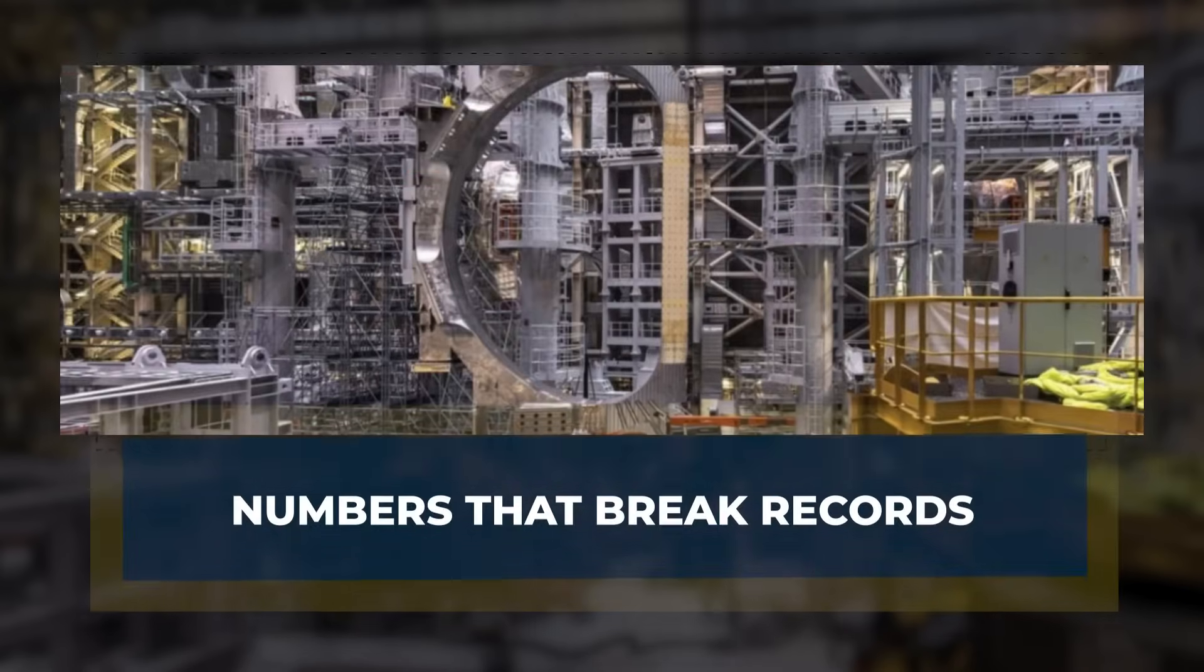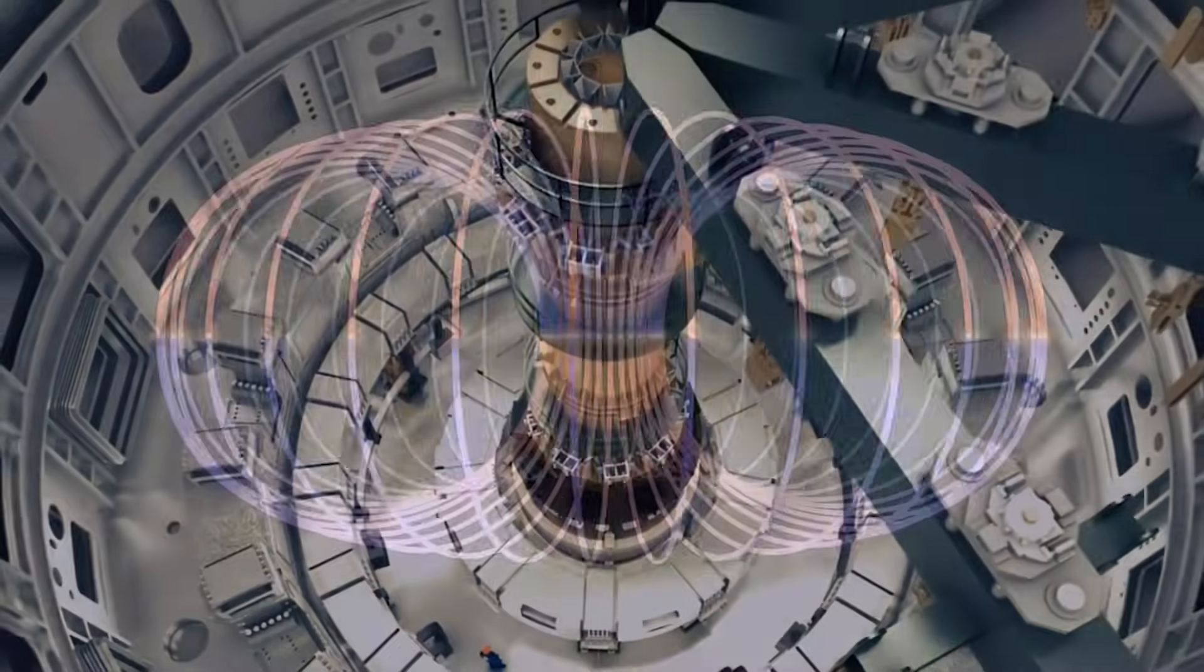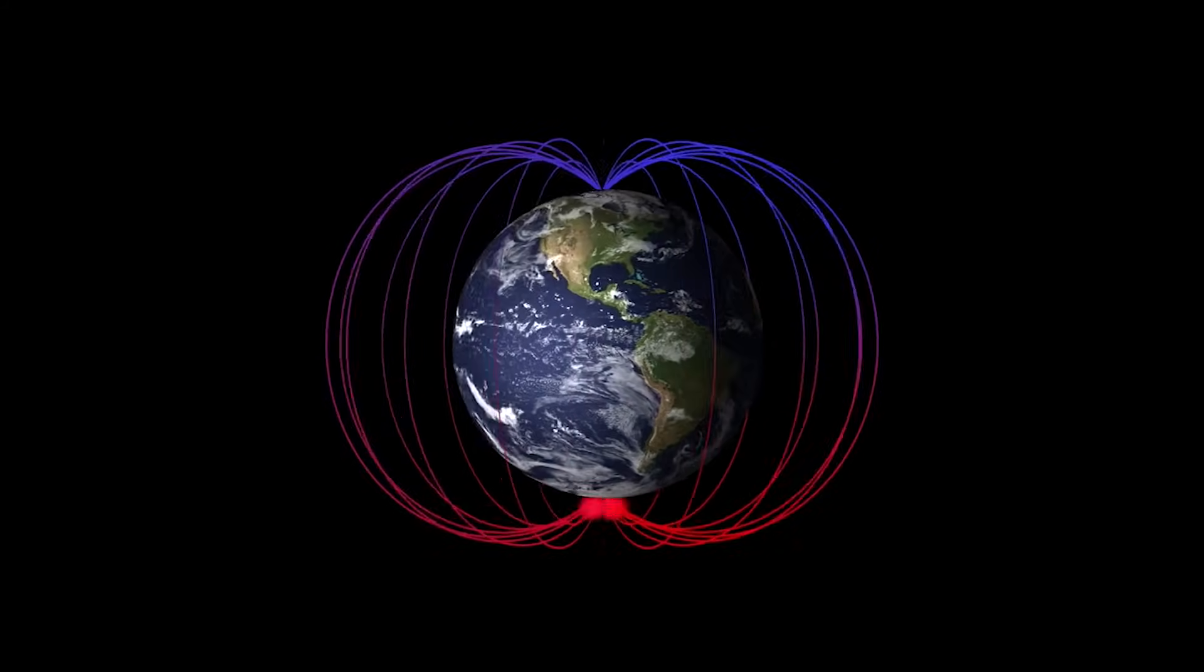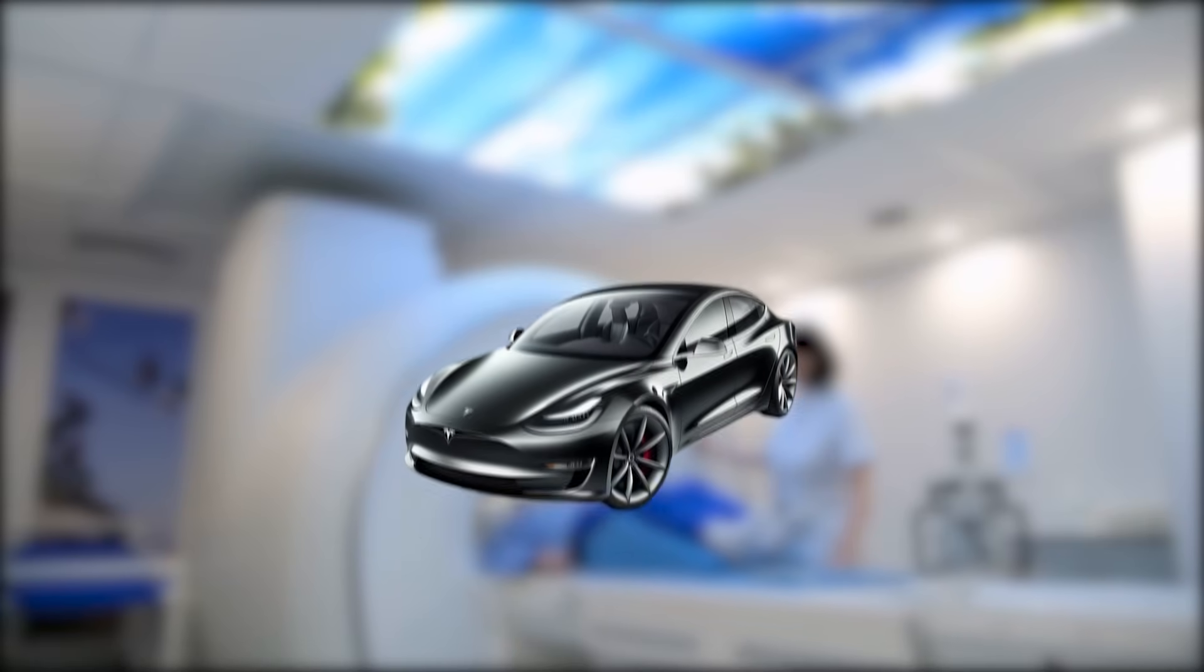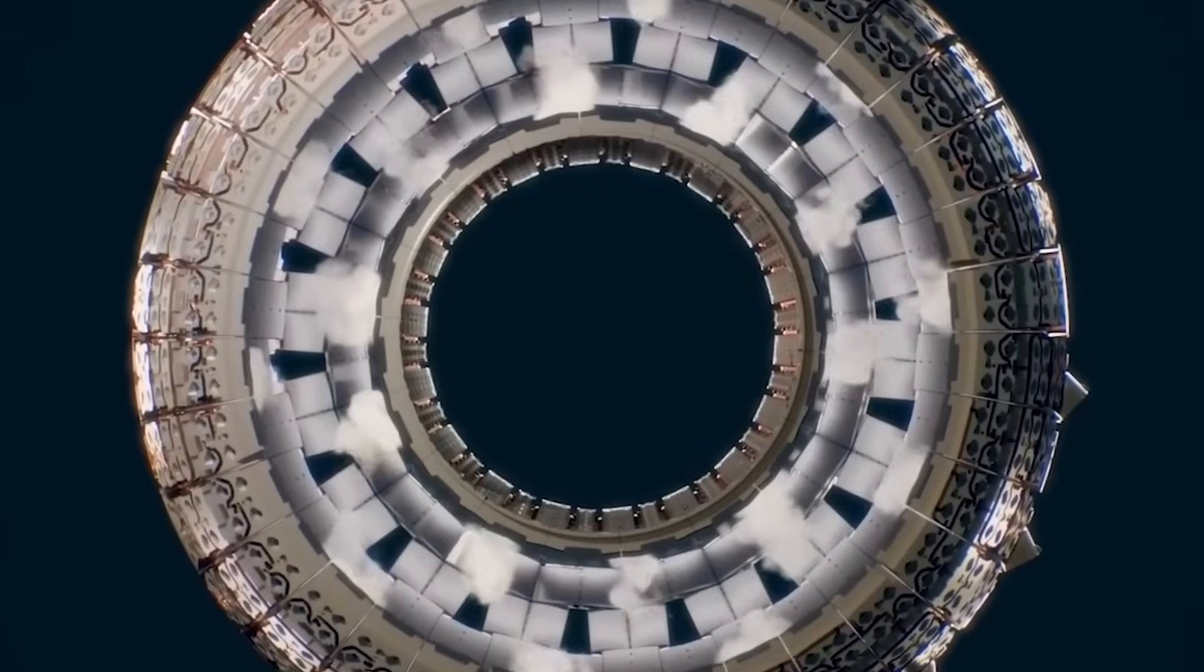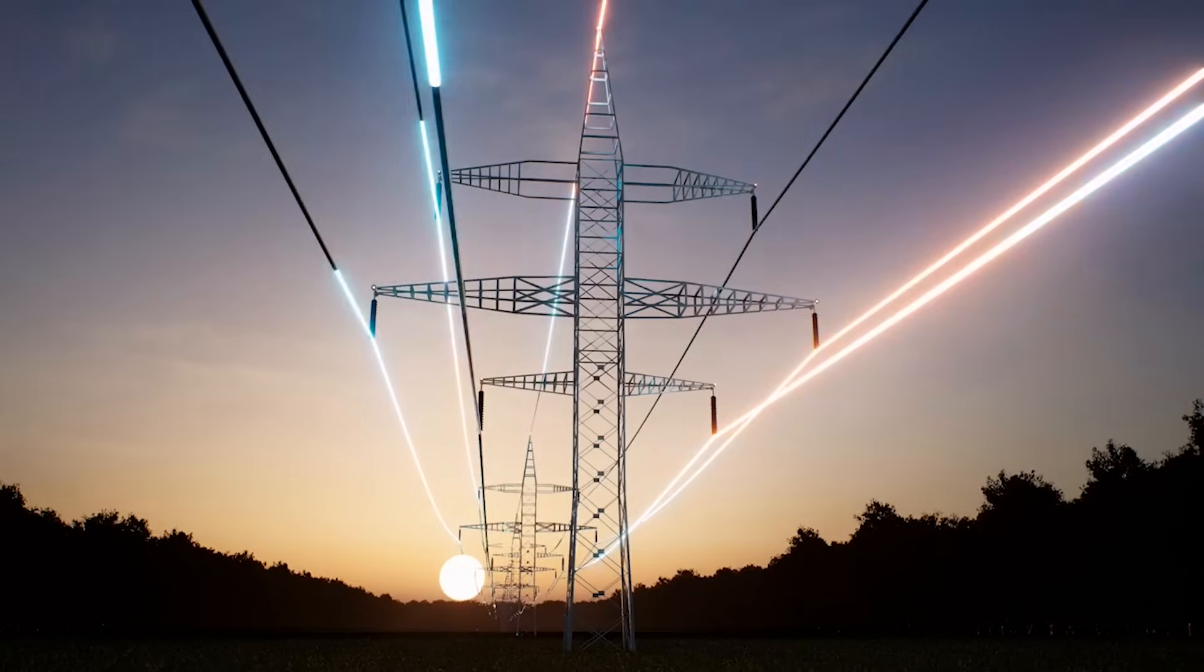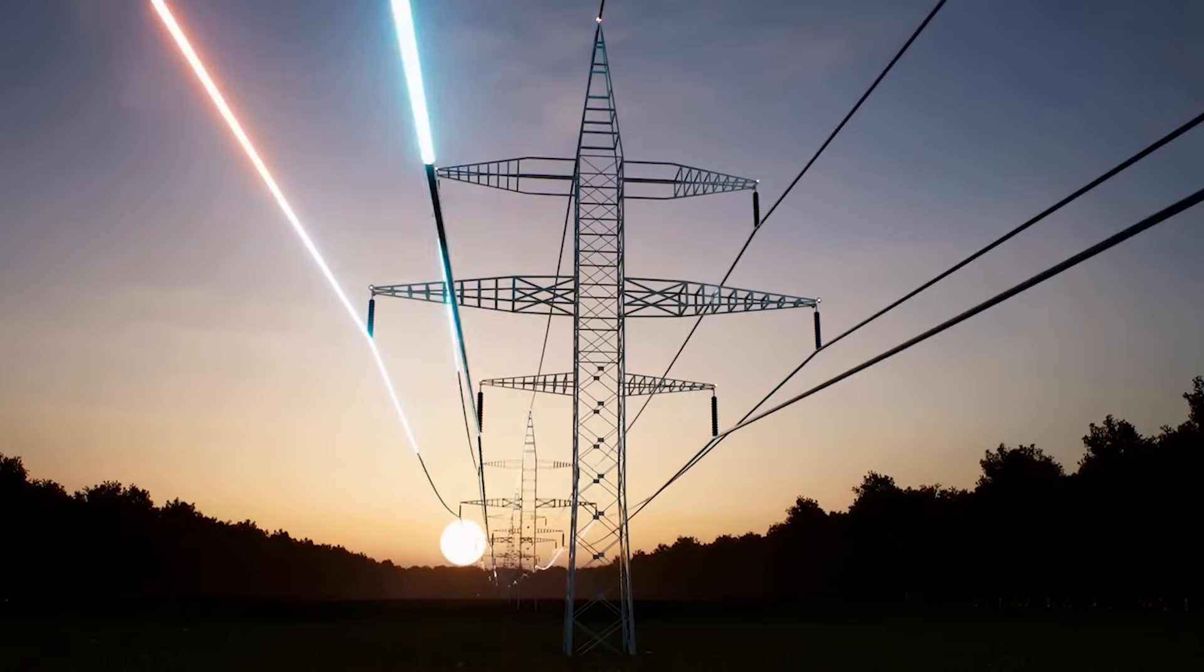The central solenoid isn't just massive in size, it's staggering in performance. Once energized, it will unleash a magnetic field of 13 tesla, more than 280,000 times stronger than Earth's own magnetic field. To put that into perspective, MRI machines in hospitals operate at just 1.5 to 3 tesla, and they're already considered intense. This magnet will hold 6.4 gigajoules of energy, roughly equal to a fully loaded Boeing 747 thundering down a runway at takeoff. Even more astonishing, the solenoid will drive 15 million amperes of current through ITER's plasma.